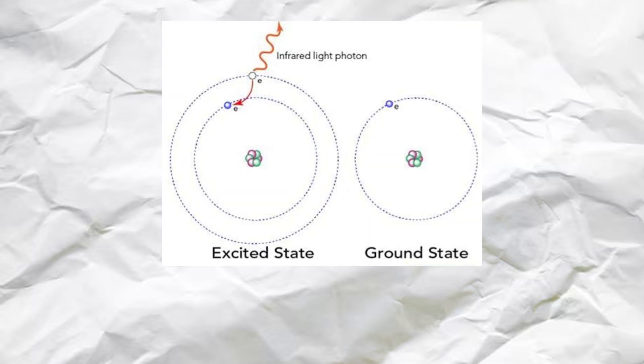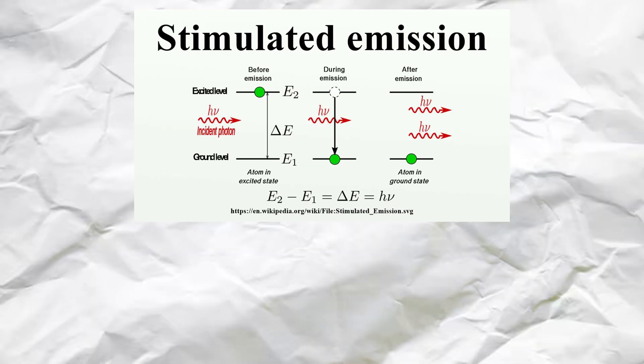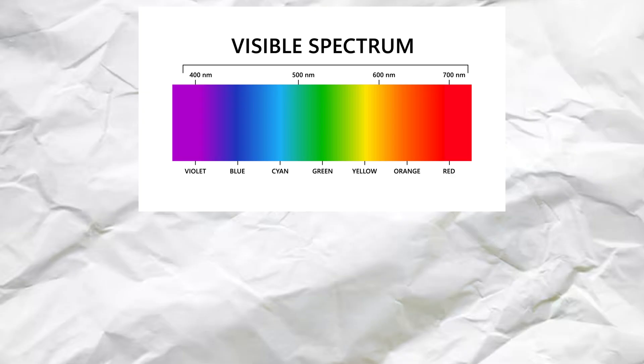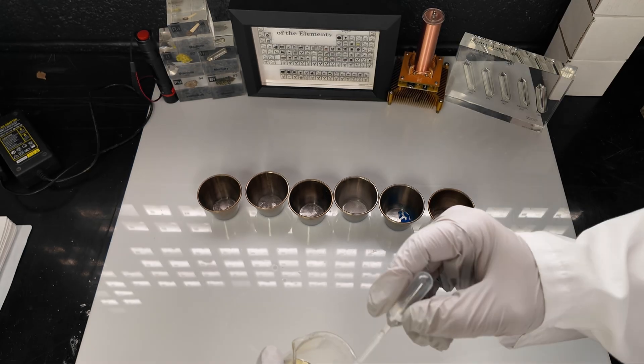Let's start with what is actually happening in the science here. Basically, when these salts are heated in a flame, the heat excites the electrons in the atoms of the salt. This causes the electrons to jump to higher energy levels. Electrons don't like staying in those excited states. They want to go back to their lower, more stable energy levels. As they do, they release energy in the form of light. The color of the light that it emits depends on the amount of energy that the electrons release when they return to those lower energy levels.